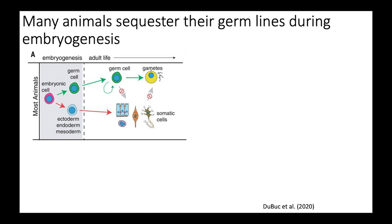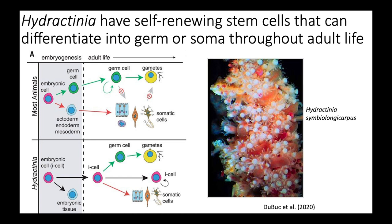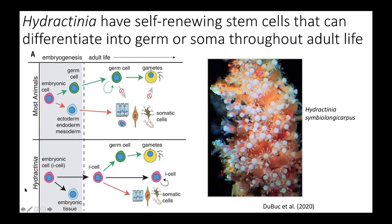More recently, it's been shown that this is not the only mechanism of cell differentiation in animals. In the model cnidarian Hydractinia, it's been shown that there are these i-cells, which are stem cells that proliferate throughout adult life and can differentiate into either germ cells or somatic cells throughout adult life, not just during embryogenesis. This was really interesting to me because I wonder about how mosaicism within i-cells may lead to somatic mosaicism that's actually shared by the gametes of an organism if they share a mutant i-cell progenitor.